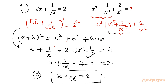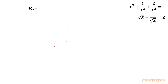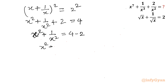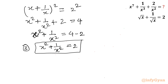Our target is to find x power 5 plus 1 over x power 5. Starting from equation 2, x plus 1 over x equals 2, I will now calculate x squared plus 1 over x squared by squaring both sides. Expanding using the identity gives x squared plus 1 over x squared plus 2 equals 4, so x squared plus 1 over x squared equals 2. Let us call this equation number 3.